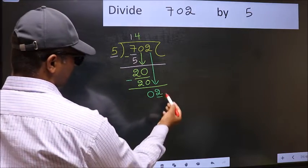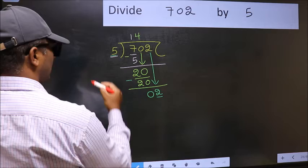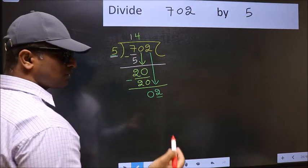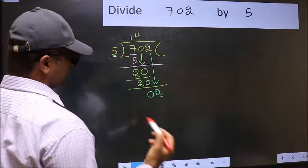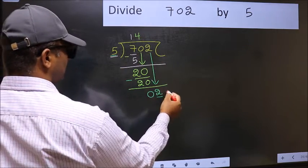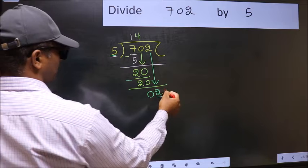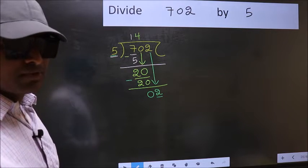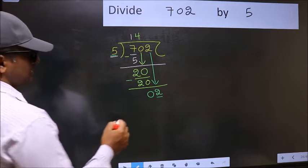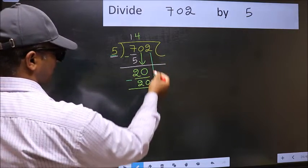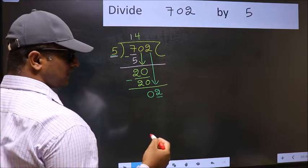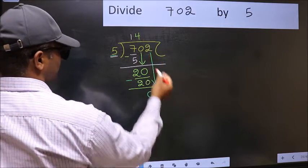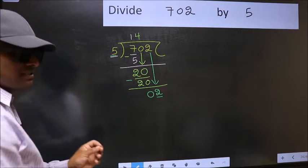And the mistake is this. Here we have 2 and here 5. 2 is smaller than 5. So what many do is, they directly put dot and take 0. Which is wrong. Why is it wrong? Because just now you brought this number down.